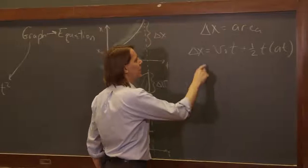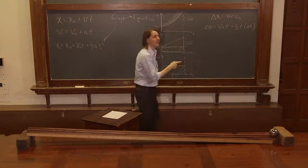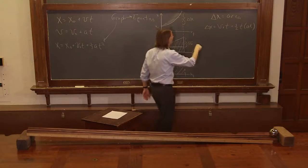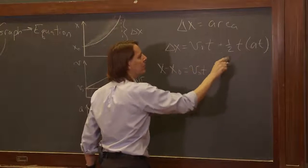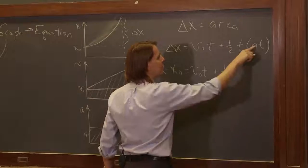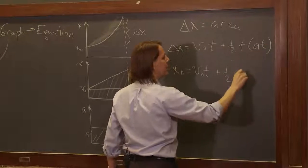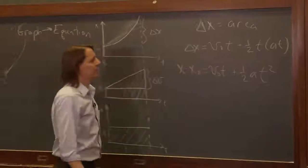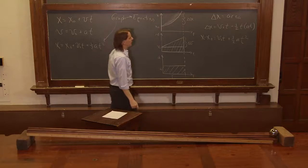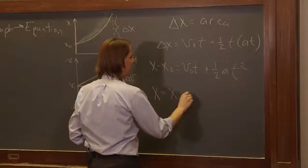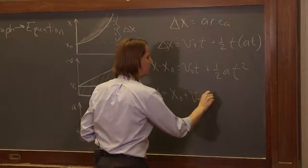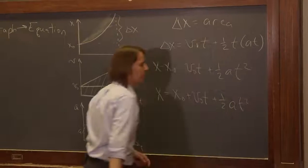And you say, okay, what is delta x again? Delta x is how far it got past x0. So this is x minus x0 equals v0t plus one-half—and you pull out the a, and then there's two t's, so it's t squared. Uh-oh. Let's see, if we bring this x0 over here, then we have x equals x0 plus v0t plus one-half at squared.